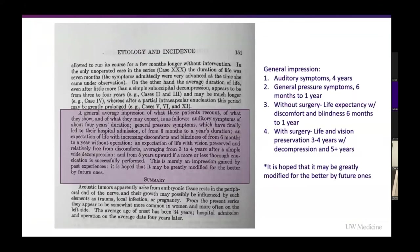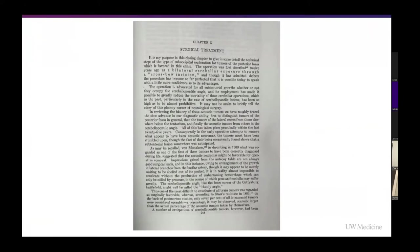Cushing's general impressions: patients were presenting with auditory symptoms and hearing loss for about four years, with general pressure symptoms — headaches, papilledema, ataxia — for about six months to a year. Without surgery, life expectancy was six months to one year with discomfort and blindness. With surgery, three to four years of life with some vision preservation. With decompression, perhaps up to five years. He knew that results would improve as more surgeons continued to operate on these tumors.